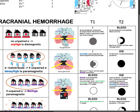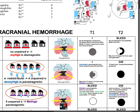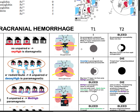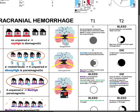Next, deoxyhemoglobin. Deoxyhemoglobin has four unpaired electrons — it is paramagnetic. But because of the dome-shaped heme, there is no dipole-dipole interaction, so it remains T1 iso-intense. Regarding T2 signal: the susceptibility inside the cell due to the paramagnetic deoxyhemoglobin is very different from the susceptibility outside the cell, which contains diamagnetic water. This difference is called compartmentalized gradient, and because of this compartmentalization, we see a T2 dark signal.